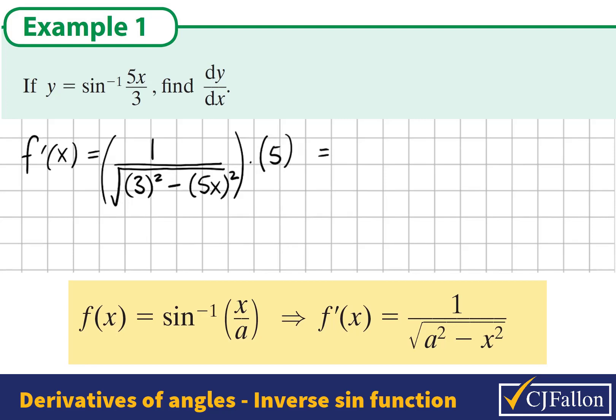Now, this is our solution. We're just going to tidy it up a little bit. So at the top we have 5 over the square root of 9 minus 25x².